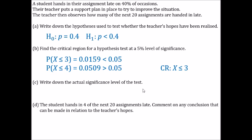Part C asks for the actual significance level. The actual significance level is the probability of x being in our critical region — the probability that x is less than or equal to 3. We've already calculated this: the actual significance level is 0.0159.